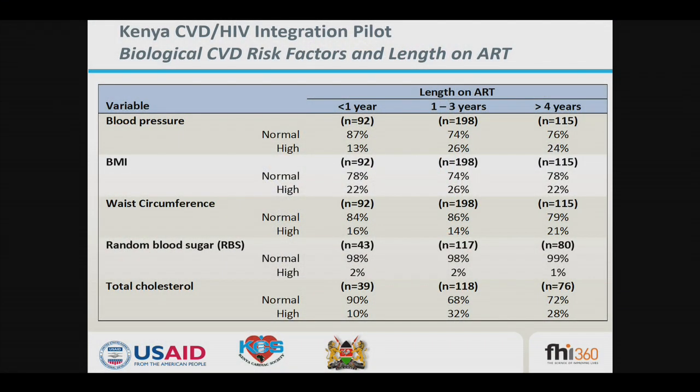Within the community, HIV patients are basically mirroring what you find in the general population — if you have high blood pressure in the general population, it makes sense that you are likely to find it within your HIV population as well. The data also shows that the percentage of people with high blood pressure increases with the length of ART, and the same is true for waist circumference and total cholesterol.